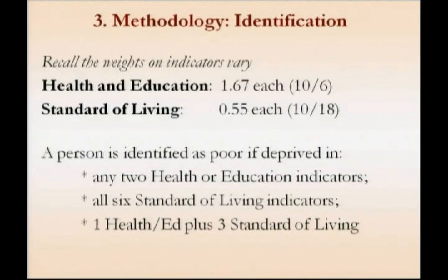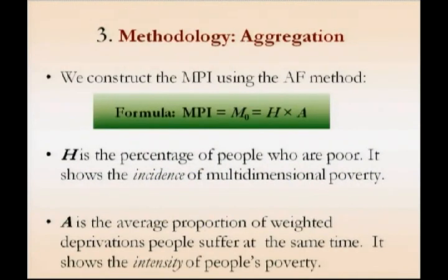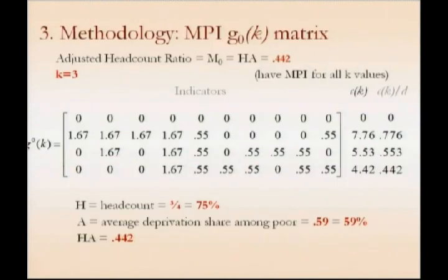Having now censored, we have the G0K matrix — we've censored all of the people who are deprived but not multidimensionally poor — and then the aggregation is very simple. It's the percentage of people who are multidimensionally poor times the average intensity, which is the average percentage of weighted indicators in which the average person in that country is deprived. We call H incidence and A intensity, learning from Mexico's vocabulary. Here is the matrix with the weights specified, as an example of how that would look.